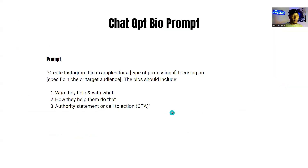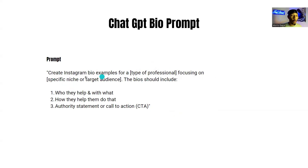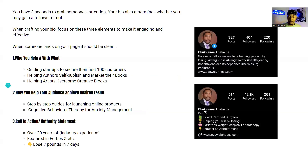If you're not sure what to say or how to put it together, here's a ChatGPT prompt — use it word for word: 'Create Instagram bio examples for a [your type of profession], focusing on [your specific niche or target audience]. The bio should include who they're helping and with what, how they help them do that, and an authority statement or call to action.' You can also add emojis as bullet points on the left side, like Dr. Chuck's bio — it makes it clearer and adds some style.